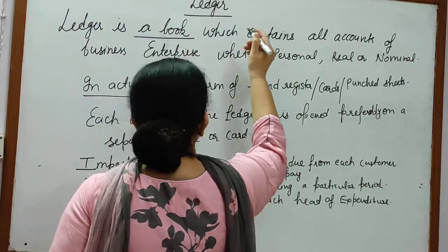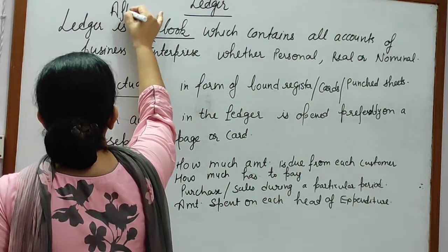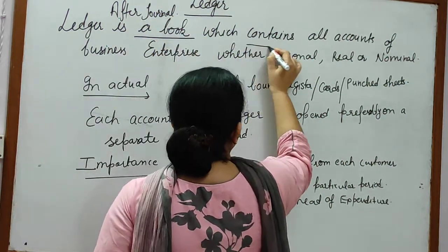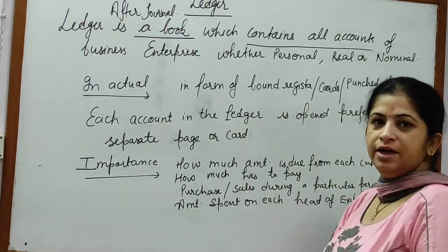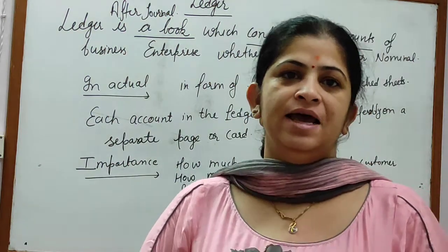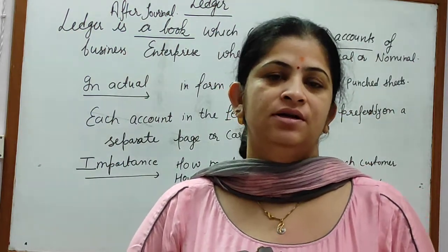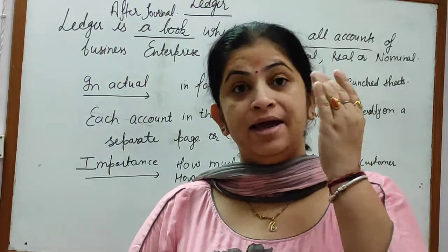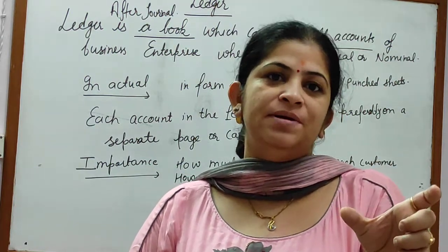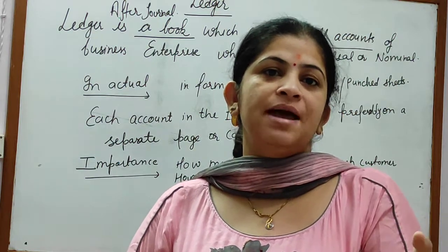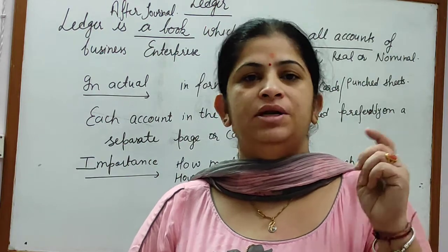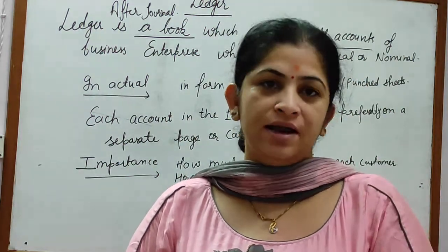After journal, Ledger is a book which contains all accounts. It means that all the transactions are classified at one place, and that one place is known as Ledger. It contains personal accounts, real accounts, and nominal accounts. All types of accounts are maintained under the Ledger.